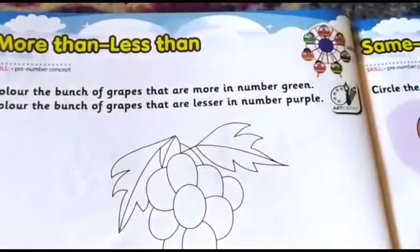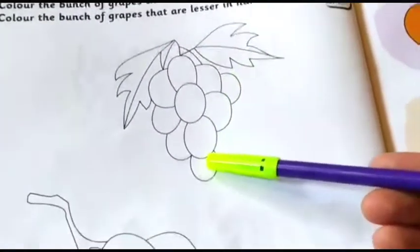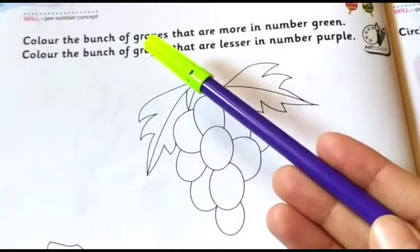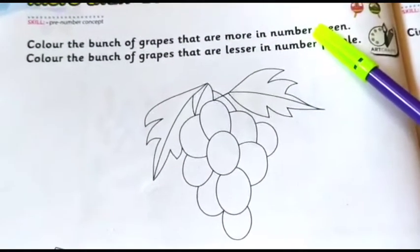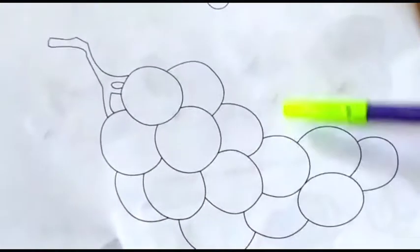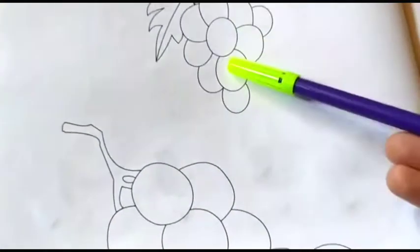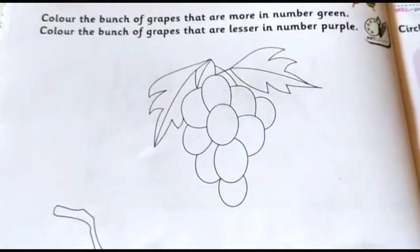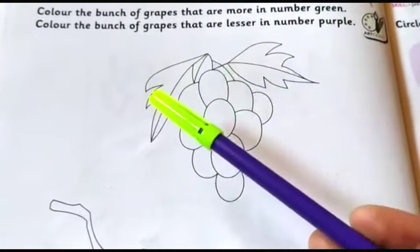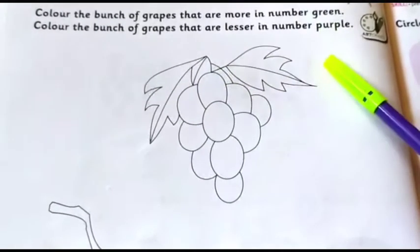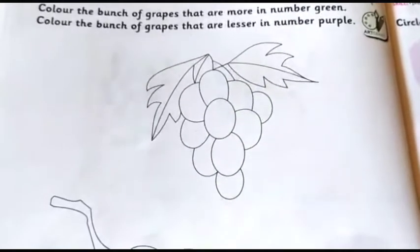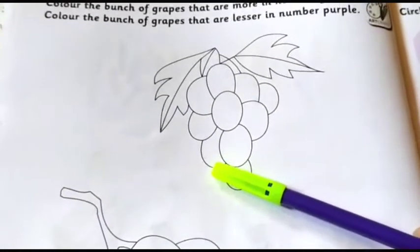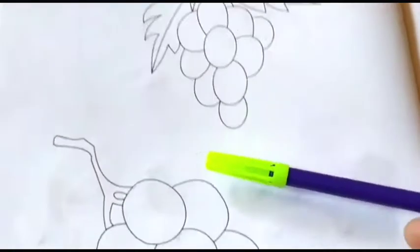Now today we have an activity on more than and less than. You can see here a bunch of grapes. Two sets of grapes are given here. You have to color the bunch of grapes that are more in number with green color, and the bunch of grapes that are less in number with purple color.